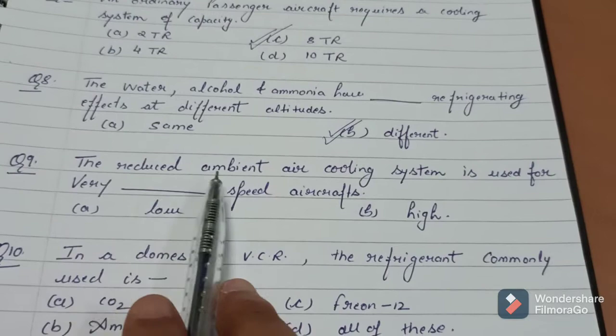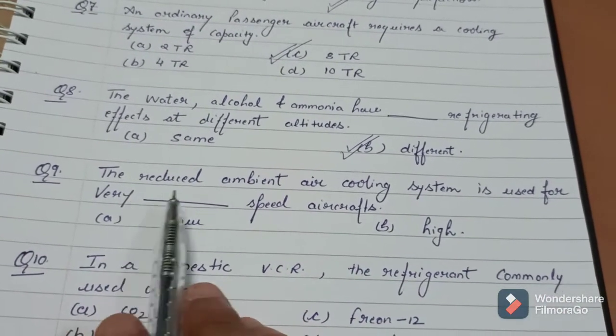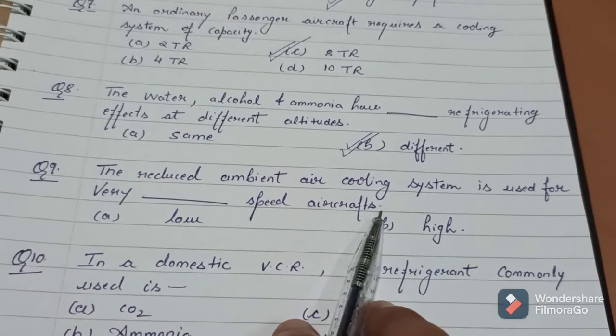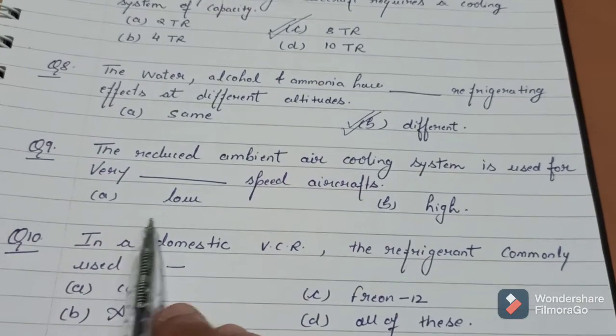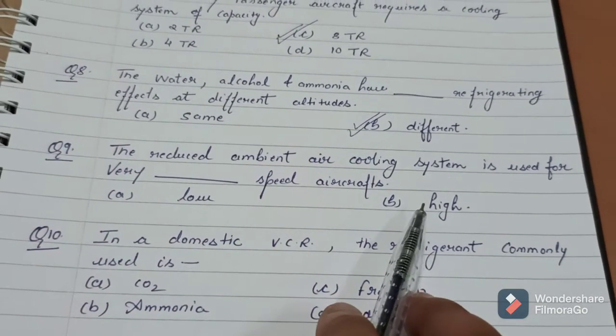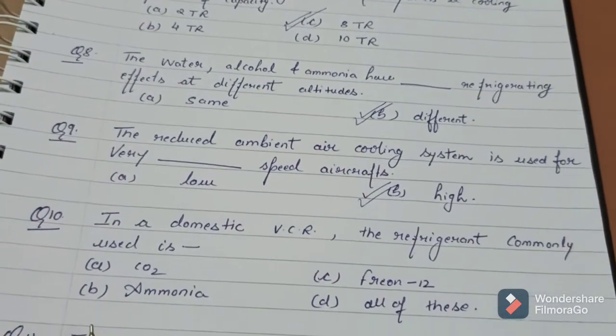Question number 9. The reduced ambient air cooling system is used for the very dash speed aircraft. The reduced ambient air cooling system is used for very high speed aircraft.